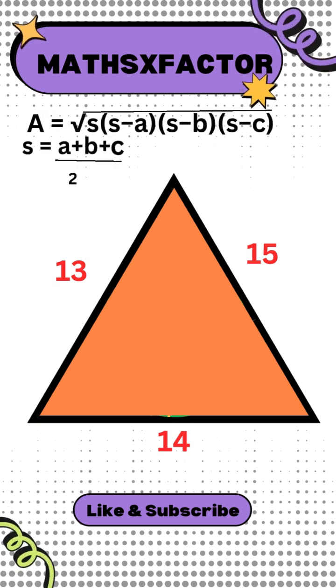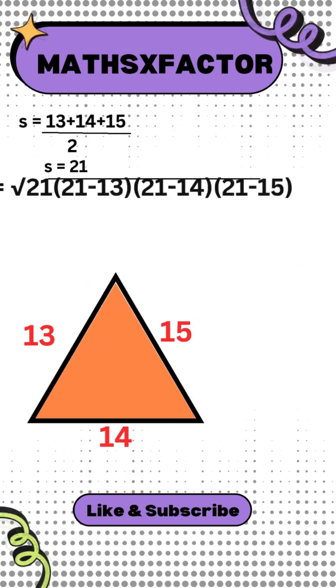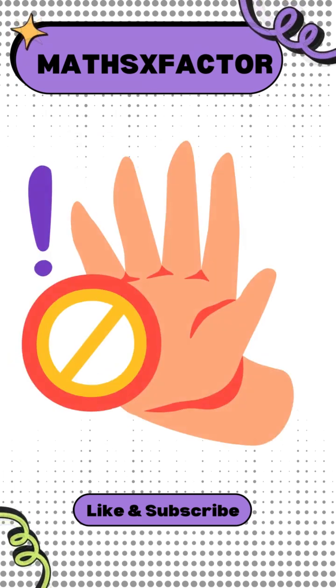We can also find the area of this triangle by using Heron's formula. By putting values we get the area of the triangle is 84. But wait.